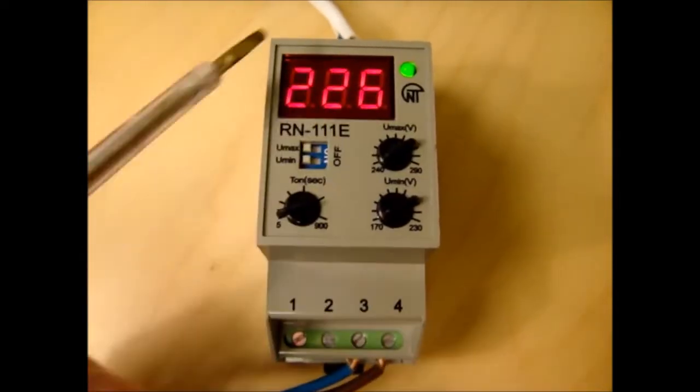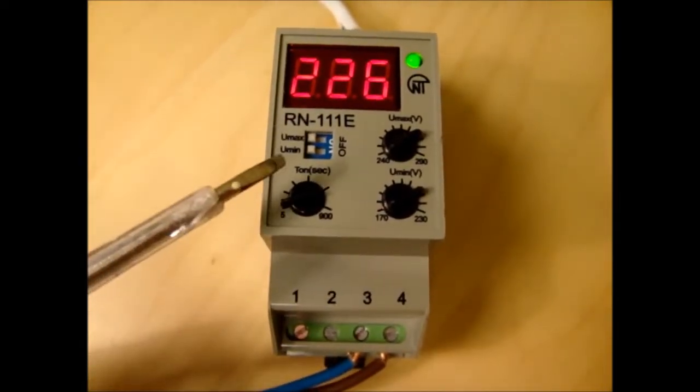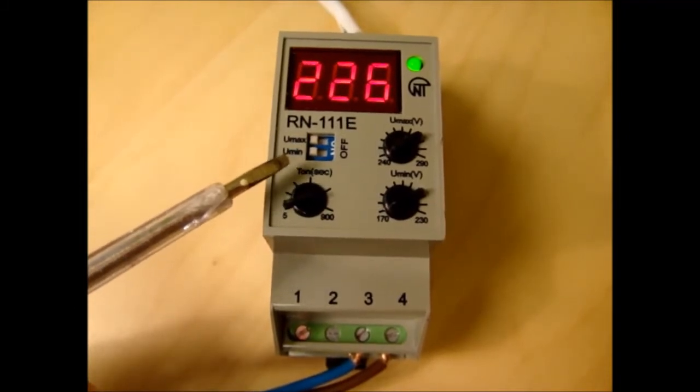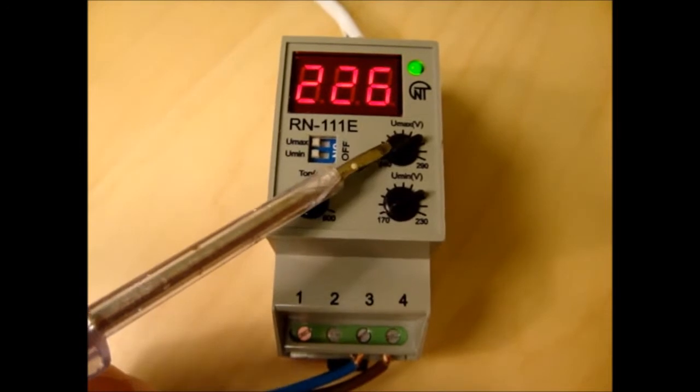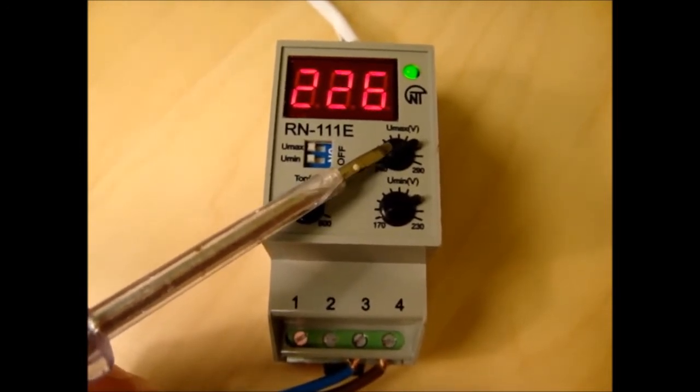Three-digit display shows measured voltage level. Apart from that, relay has following setting switches: switch which turns off maximal and minimum voltage, potentiometer of maximal voltage and minimum voltage.